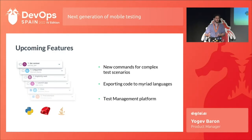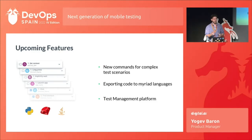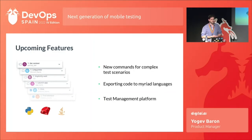What are we planning next? You saw there are not a lot of steps — just find element, click, and send keys. We want to cope with more complex test scenarios, so we need more commands. We are working on different commands, for example a command that scrolls and eventually finds an element. We're also working on providing different languages for users to export code to.